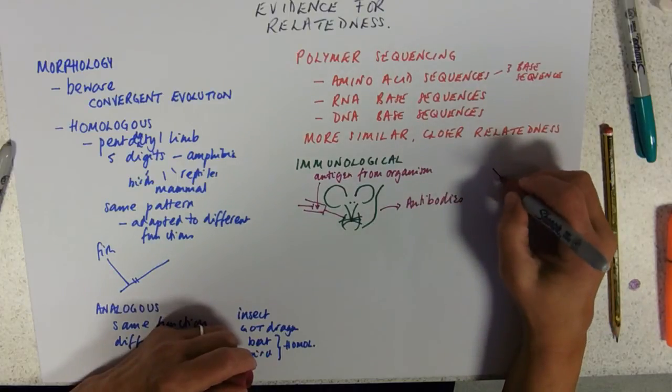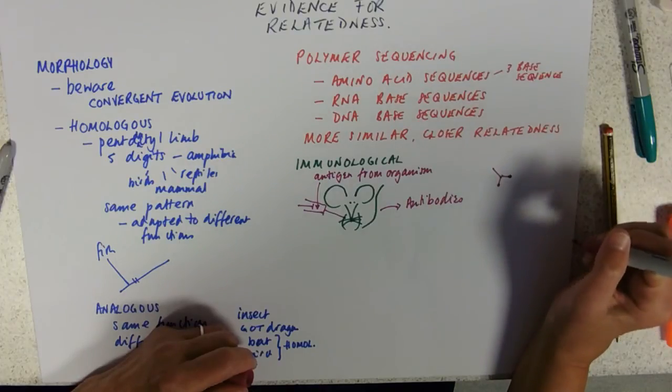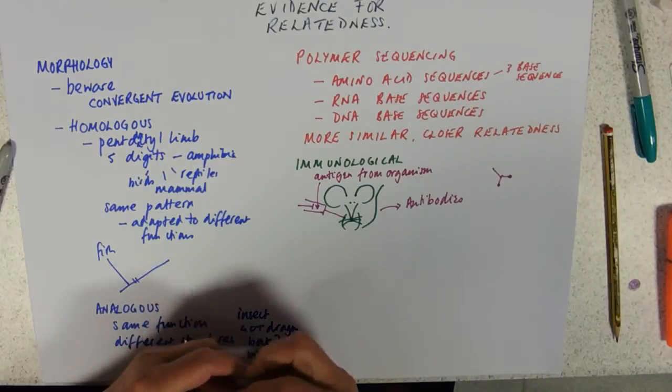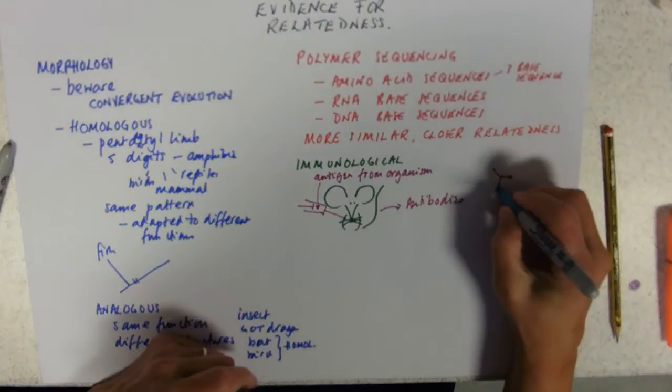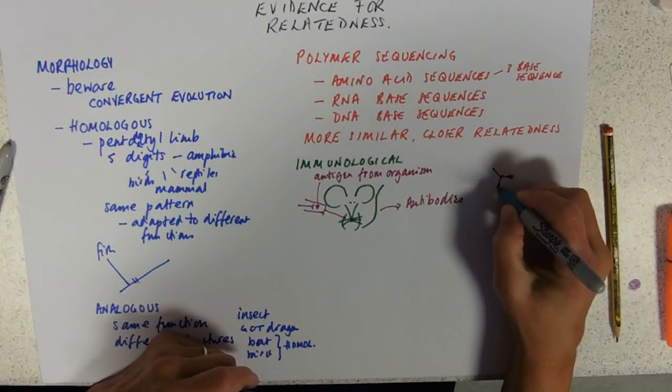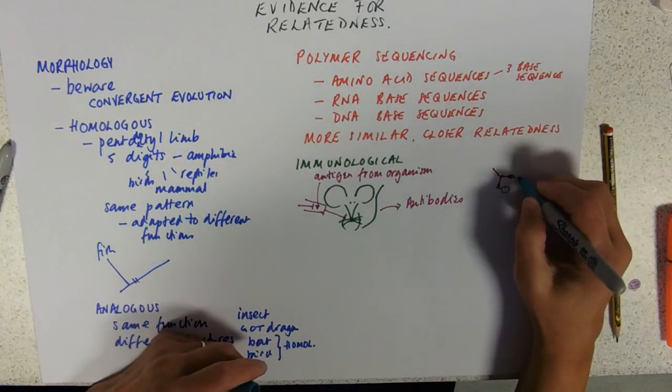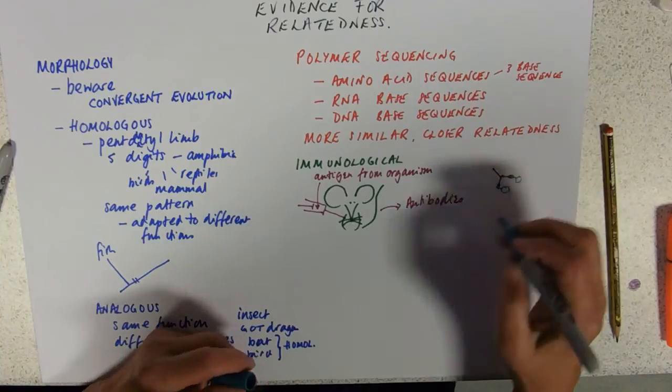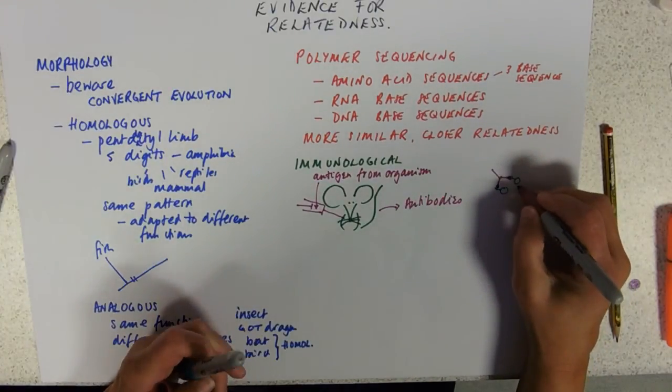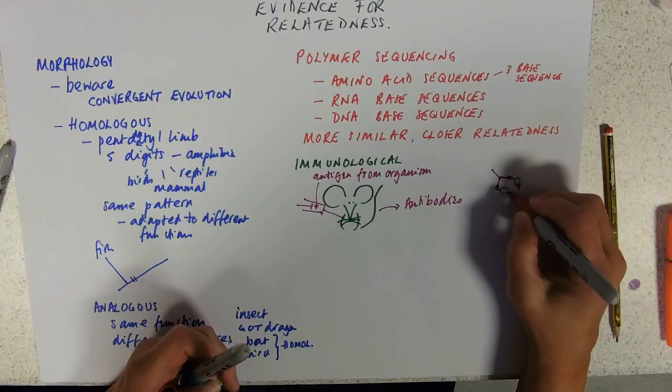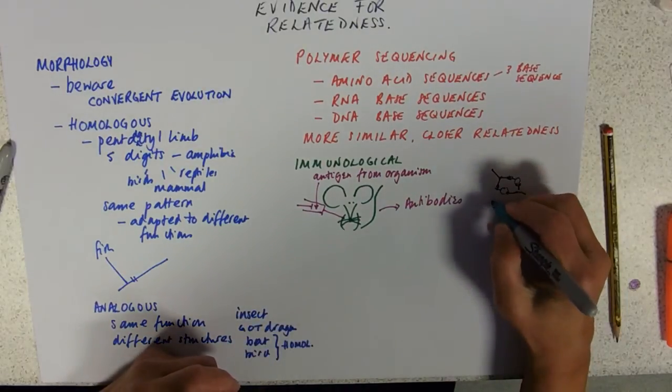And what the mouse does in response is it produces antibodies. So antibodies are kind of Y-shaped with a little binding, specific binding site at the end. So what this mouse is doing is producing antibodies for those particular antigens. And we'll clump together the cells that have those antigens on them. So what you get is a little set of clumps of cells. This process is called agglutination.